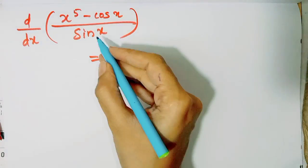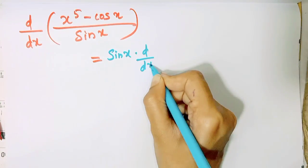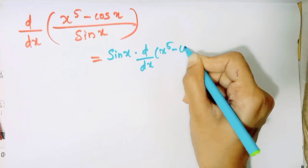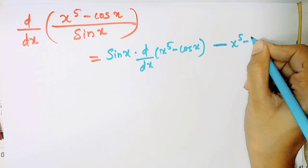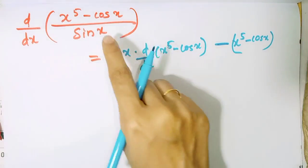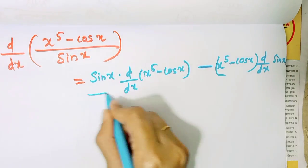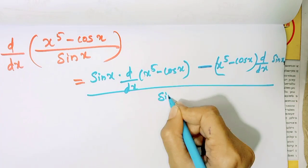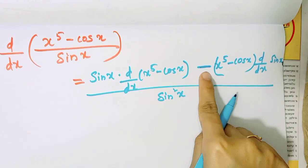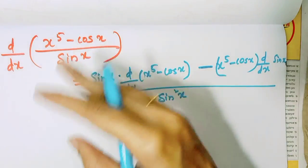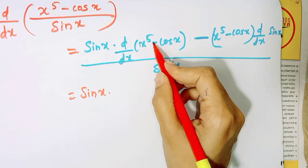Now starting with which rule: sin x is the function. The first function is the derivative of d by dx of x raised to 5 minus cos x. This is the first function: x raised to 5 minus cos x. This is the derivative of d by dx of sin x, all divided by sin x.